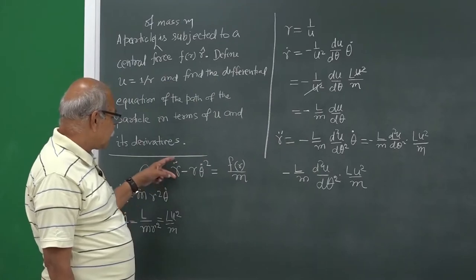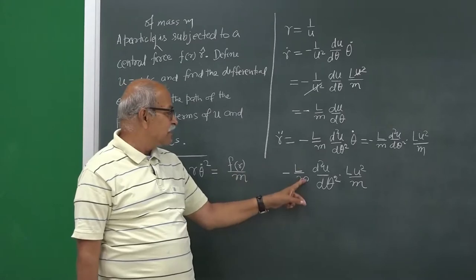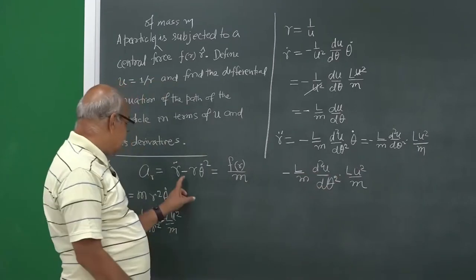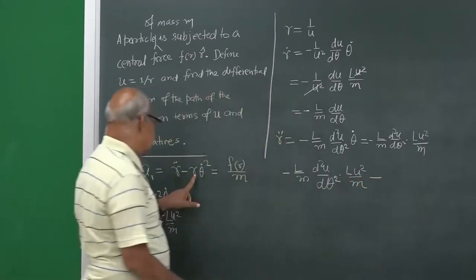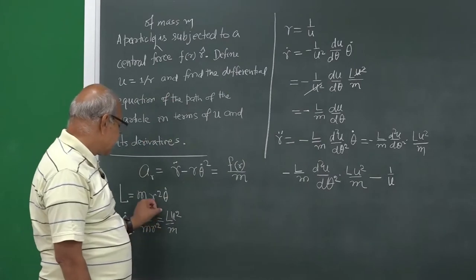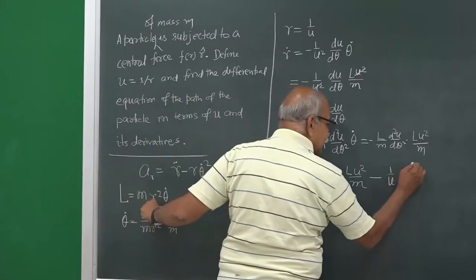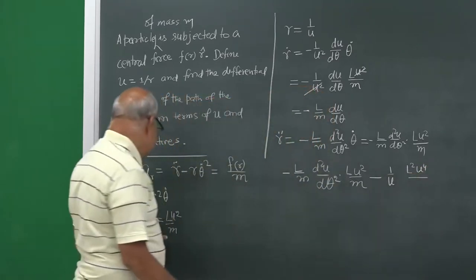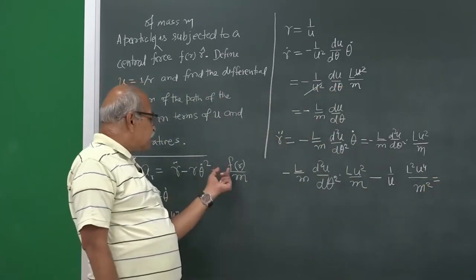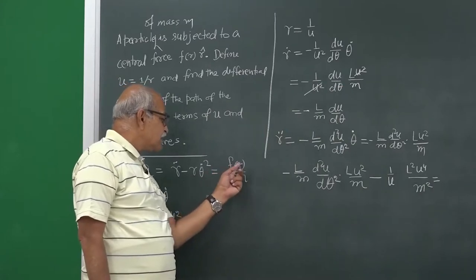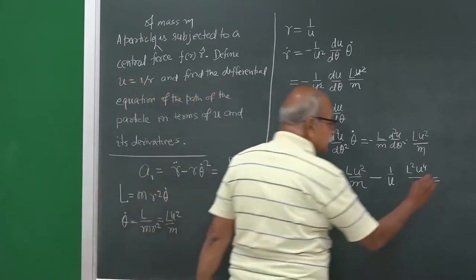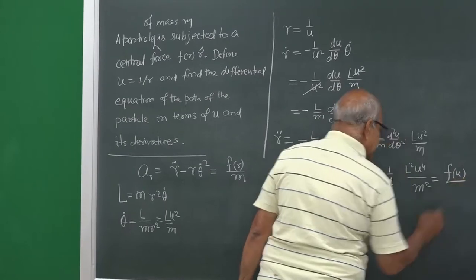So, r-double-dot is −(L/m)·(d²u/dθ²)·(Lu²/m), then minus r·θ̇-squared: this r is 1/u, and θ̇-squared is L²u⁴/m². This equals f(r)/m. We will write it as f(u)/m — where f(u) is the force function expressed in terms of u — divided by mass.